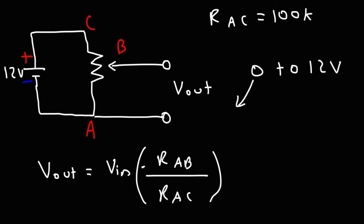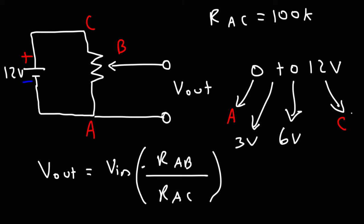If you swing the knob towards point A, you're going to bring the voltage to 0 volts. If you swing it towards point C, you can bring the voltage to 12 volts. If you put it in the middle, you'll get 6 volts. If you put it at the 25 percent mark, you'll get a quarter of 12 volts, or 3 volts. At the 75 percent mark, you'll get 9 volts. By turning the knob, you can vary the output voltage from 0 to the maximum of the input voltage. That's how you could use a potentiometer in a voltage divider circuit.